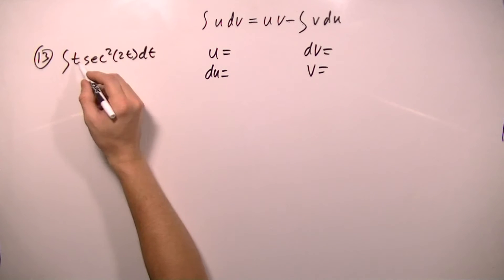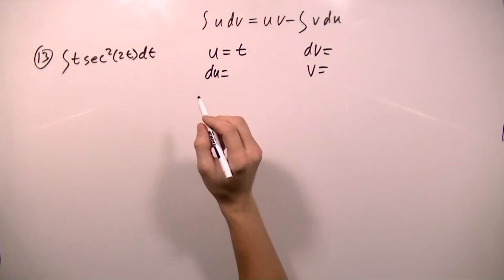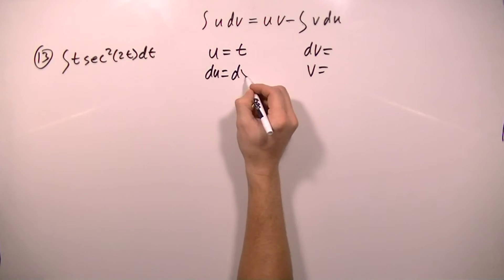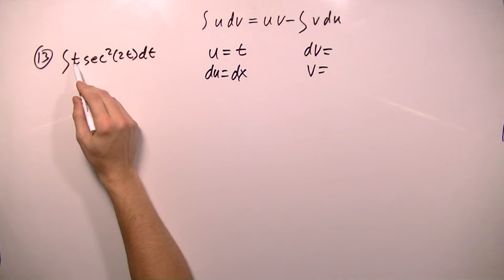So I've decided that I'm going to set t equal to u, and that way du will just be dx. So this t being here is what's stopping me from integrating. And that's why I'm picking t, because it's going to go away when I take the integral.